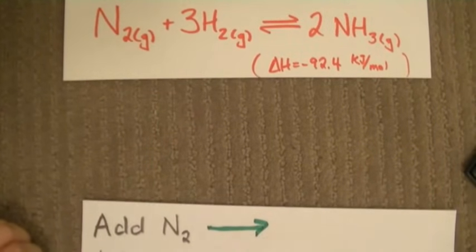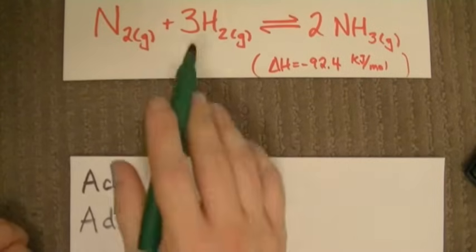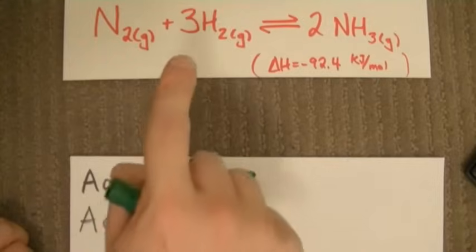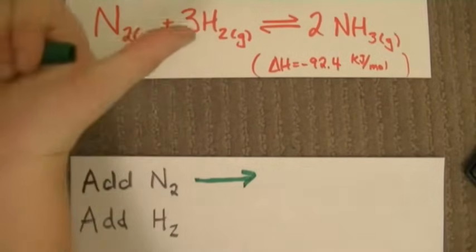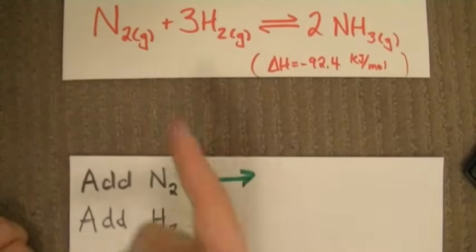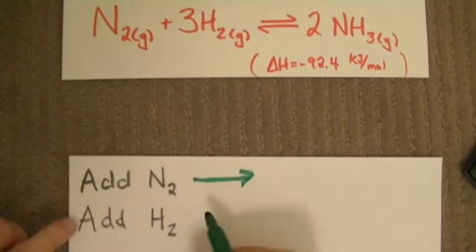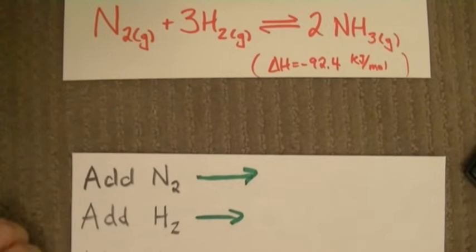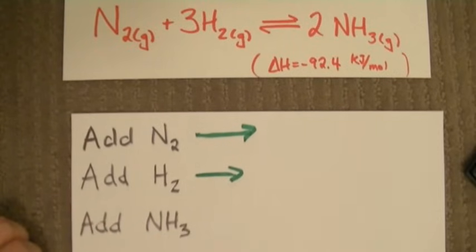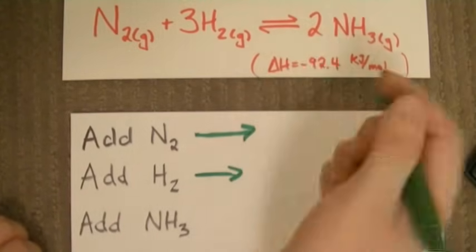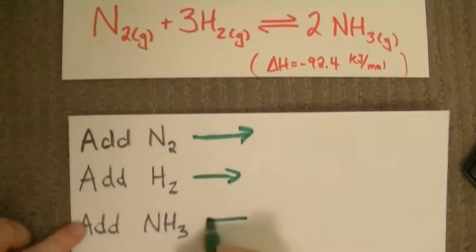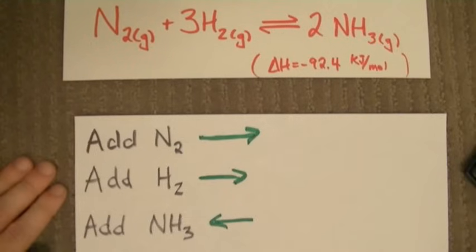The same is true if you add hydrogen. Hydrogen's a reactant, and if you add one of the reactants, the system will move to offset that by forming some ammonia out of the new hydrogen. The system will react by shifting to the right. And you can probably guess that if we added ammonia to the right-hand side, we want to consume some of it, so we shift to the left in that case.